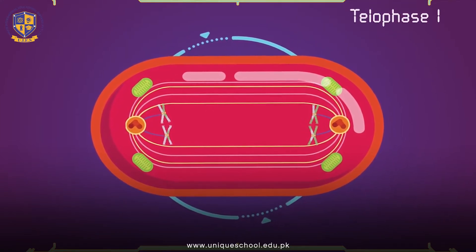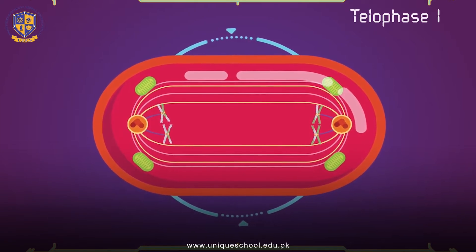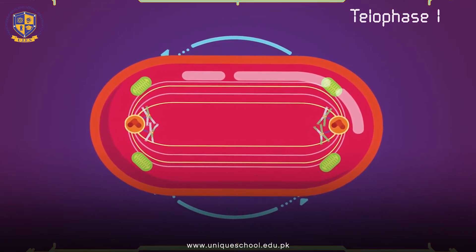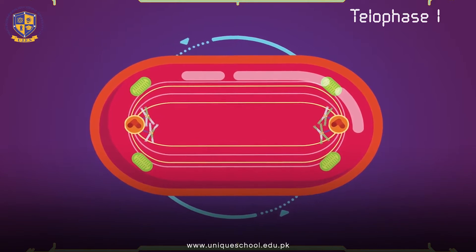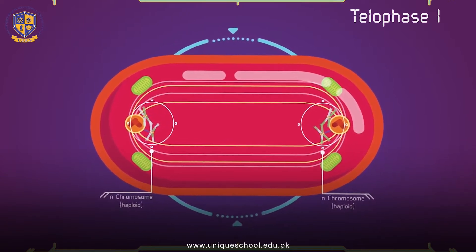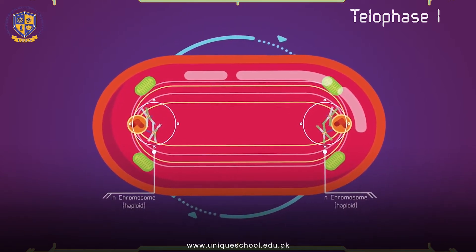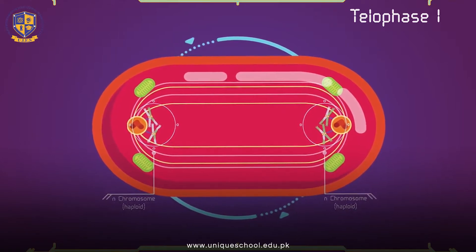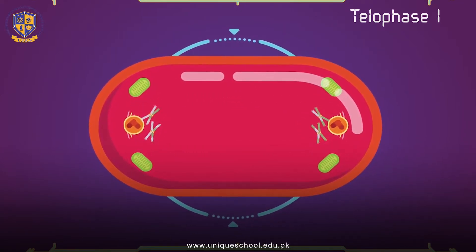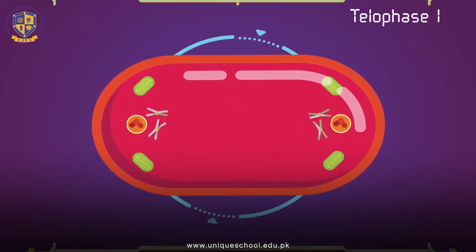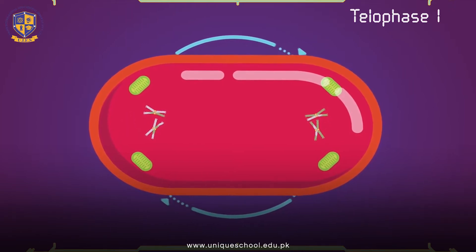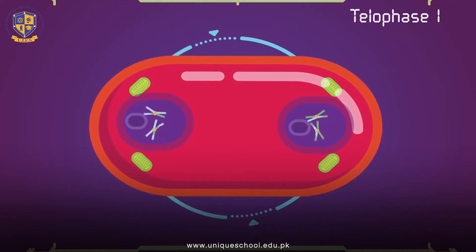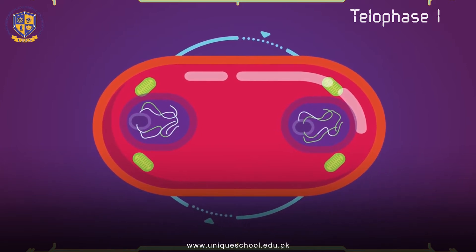Telophase I: The first meiotic division effectively ends when the chromosomes arrive at the poles. Each daughter cell now has half the number of chromosomes, but each chromosome consists of a pair of chromatids. The microtubules that make up the spindle network disappear, and a new nuclear membrane surrounds each haploid set. The chromosomes uncoil back into chromatin.